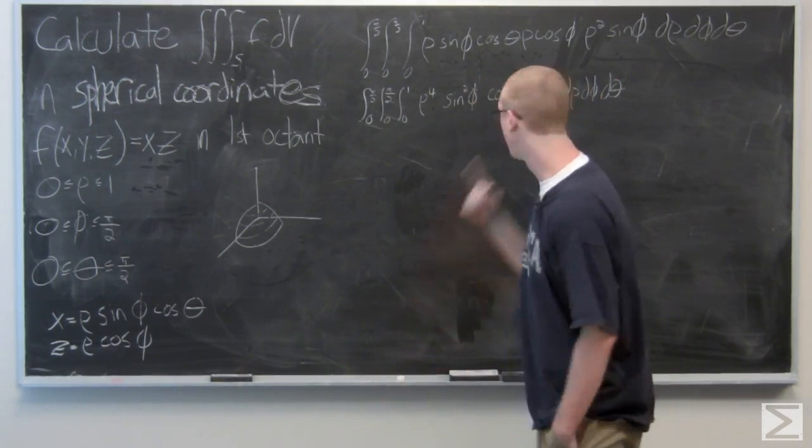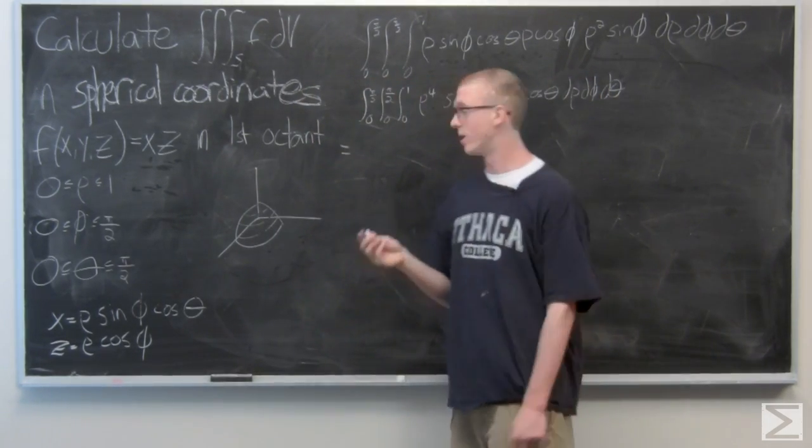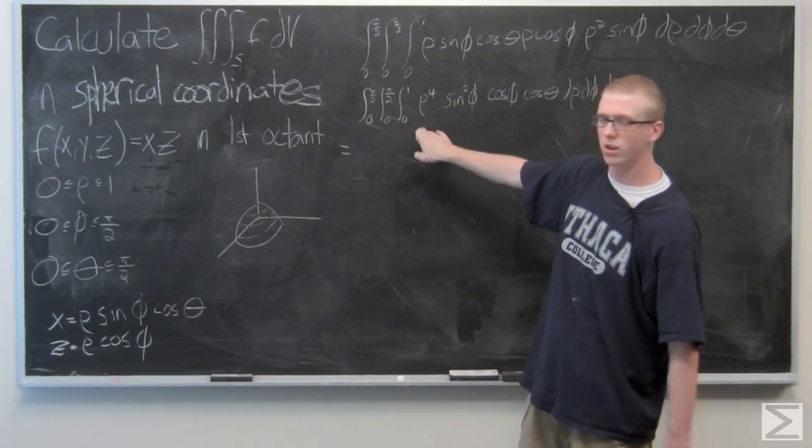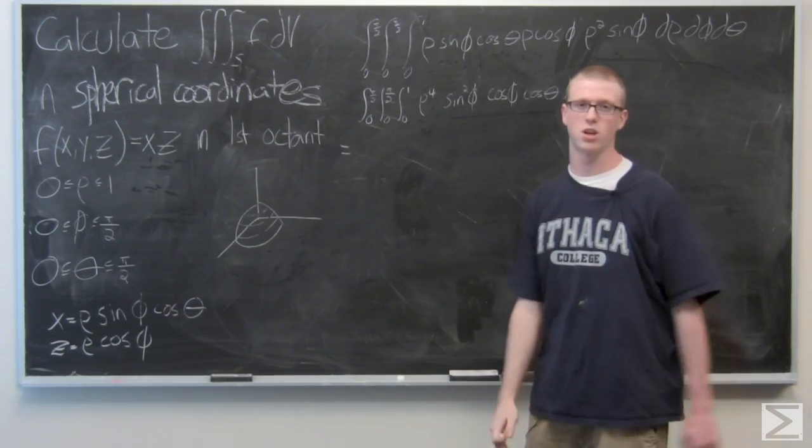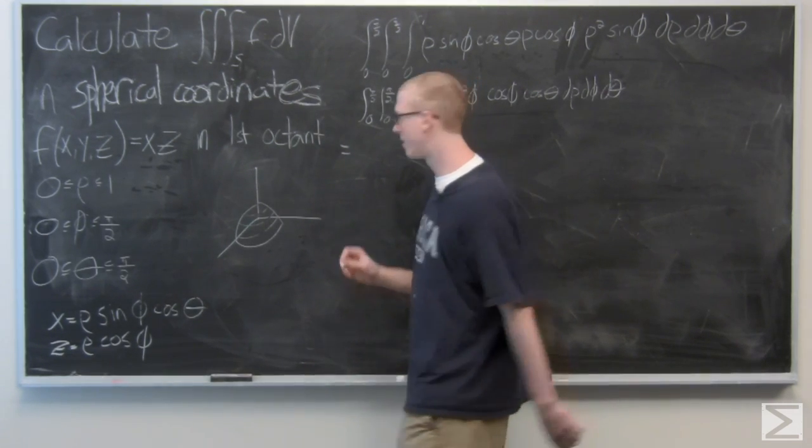Now that we have this all set up, it's actually pretty easy. We can just carry it out from here. So as I evaluate with respect to rho, the integral of rho to the fourth is one-fifth rho to the fifth. All of this is going to be treated as a constant because there is no rho. So I'm going to go ahead and pull that one-fifth out immediately.